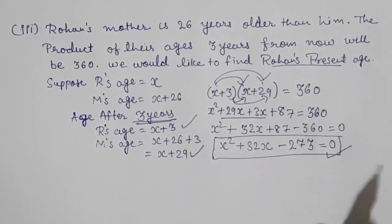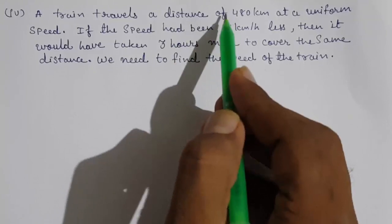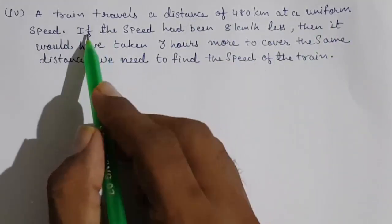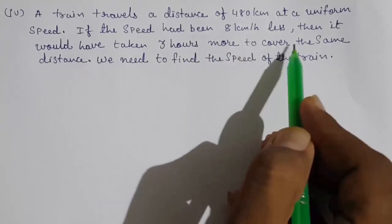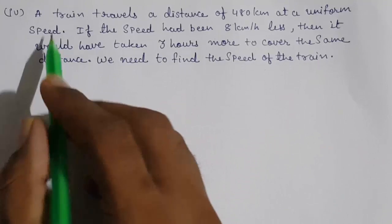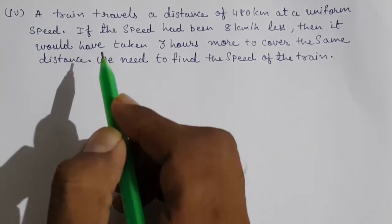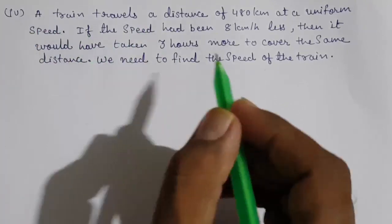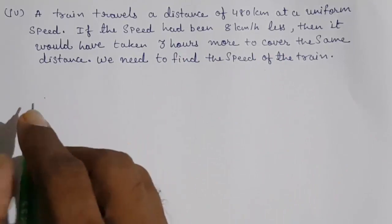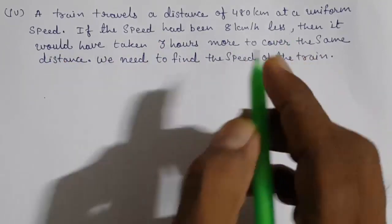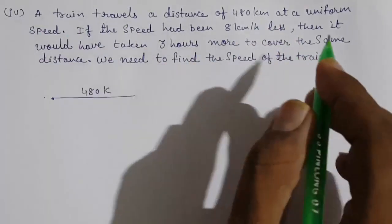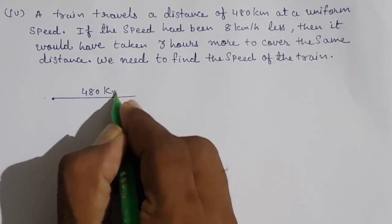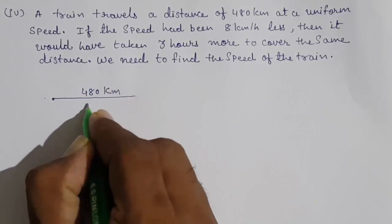Moving to Question Number 4: a train travels a distance of 480 km at a uniform speed. If the speed had been 8 km/h less, it would have taken 3 hours more to cover the same distance. This is a frequently asked board examination question. Draw a figure to solve it: distance is 480 km, suppose the normal speed is x km/h.